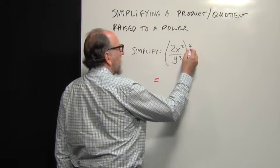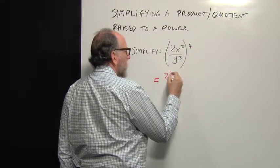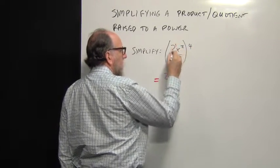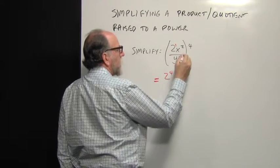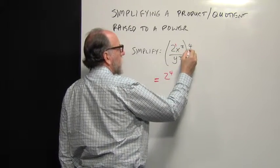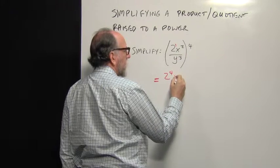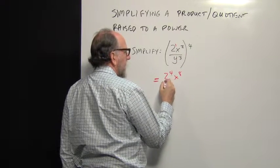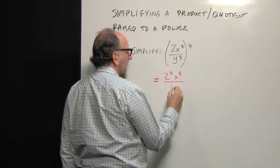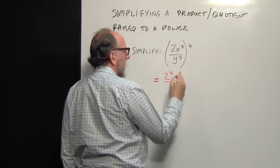So that means we put the fourth power on the two, because it has an understood power of one. We multiply those exponents. We multiply these exponents as well. Two times four is eight, and on the bottom we have y to the three times four, which is twelve.